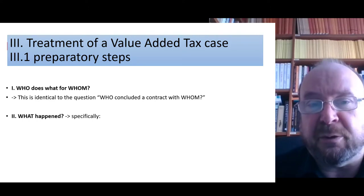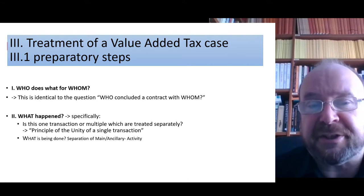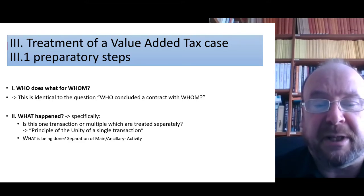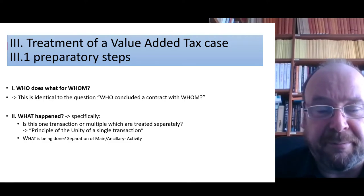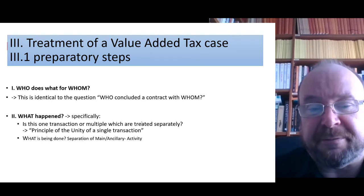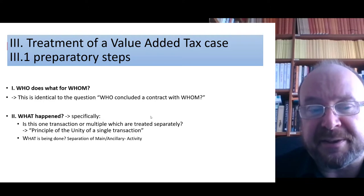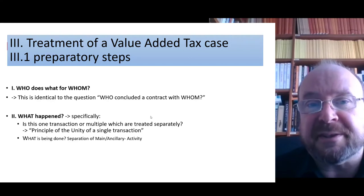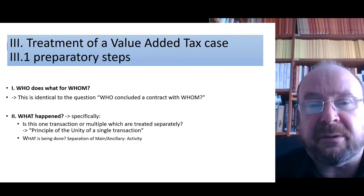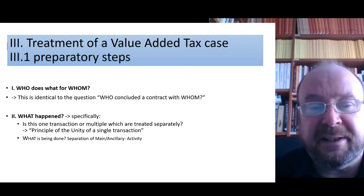The second question is what specifically happened between these persons. This can be split into two sub-questions. First: what is happening between the two — is it one single transaction or a set of multiple transactions that must be treated separately? The underlying principle is the principle of unity or uniformity of a single transaction. In that context, you ask yourself: if it is a single transaction, what is the main element — the thing that counts for its treatment — and which elements are ancillary, meaning they do not count and just accompany the main element without any own significance.